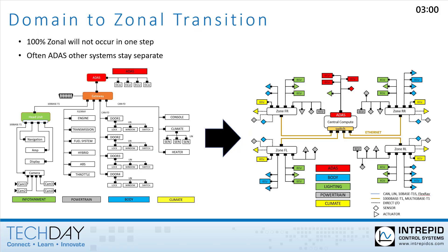The transformation from domain to 100% zonal architecture will not happen overnight. Safety-critical systems such as ADAS and systems that require high network bandwidth like infotainment are likely to remain separate for a while into the future. Mixing high-bandwidth infotainment data along with safety-critical data and other vehicle data on the same network between the zones will take more time to develop and verify given the associated risks.